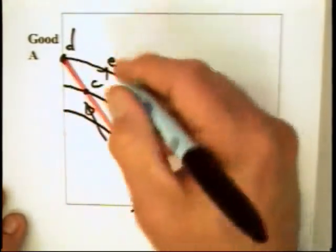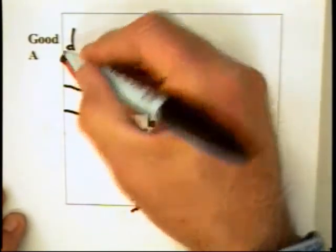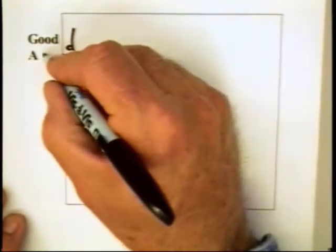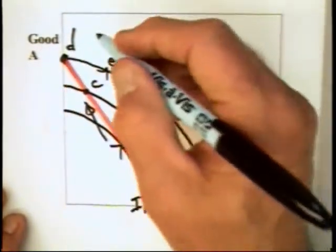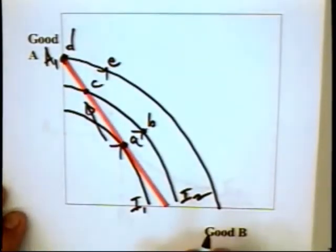D is of equal value to E. Therefore, D has got to be of greater value than C. Therefore, the individual will move to a combination of D or will consume only good A.